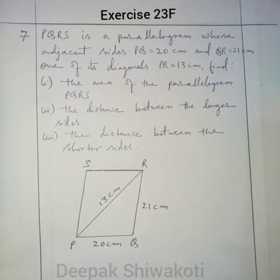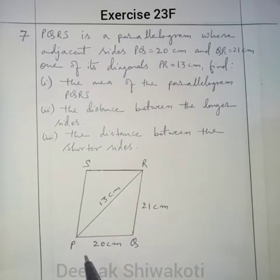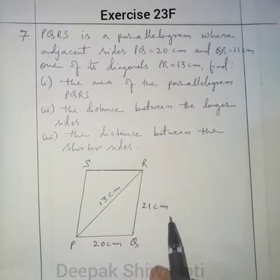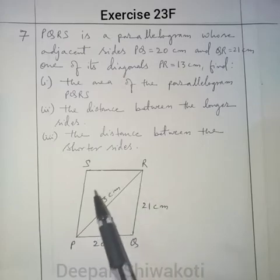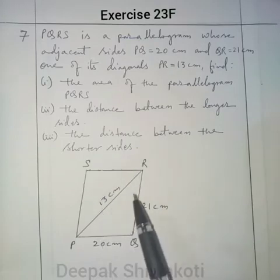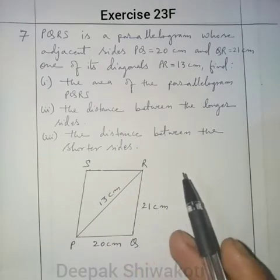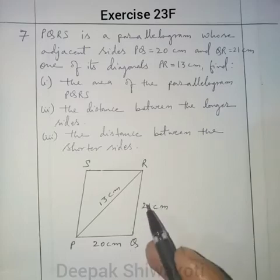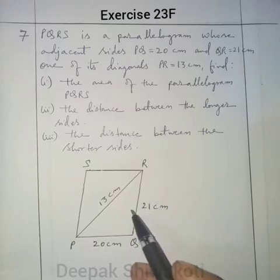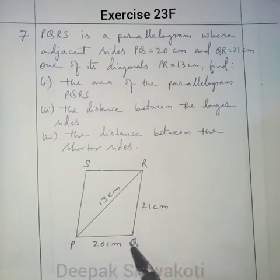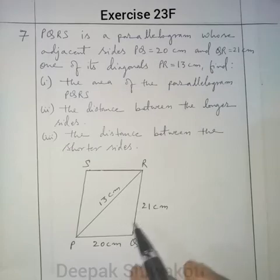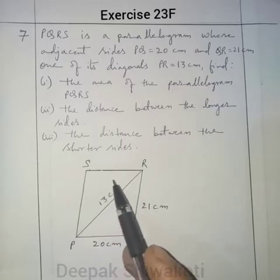Here is the figure PQRS. PQ equals 20 cm, QR equals 21 cm, and PR equals 13 cm. To find the area of the parallelogram, we require the height. Area equals base into height. The height is not given, but three sides of triangle PQR are given, and we know that double the area of this triangle is the area of the parallelogram.